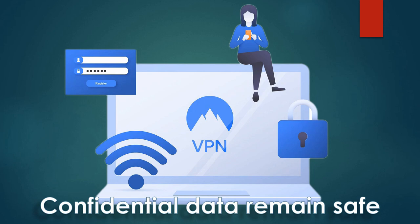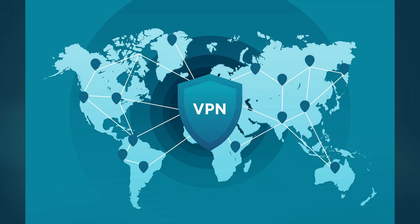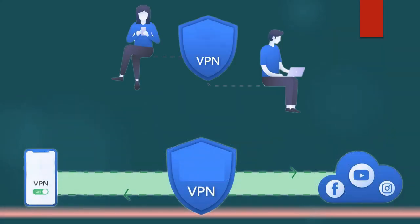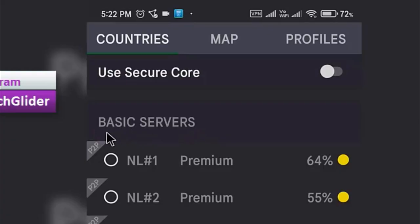Let's talk about security first. ProtonVPN has a secure VPN that sends the internet traffic through an encrypted VPN tunnel, so passwords and confidential data stay safe even over public Wi-Fi or untrusted internet connections.